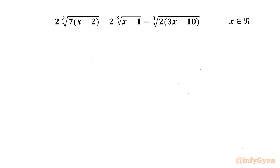Welcome to Infigyan, my dear friends. In this video we have another very interesting question from radical equations: 2 times cube root of (7x minus 2) minus 2 times cube root of (x minus 1) equals cube root of 2 times (3x minus 10). We are going to calculate the real solutions. So let's get started.